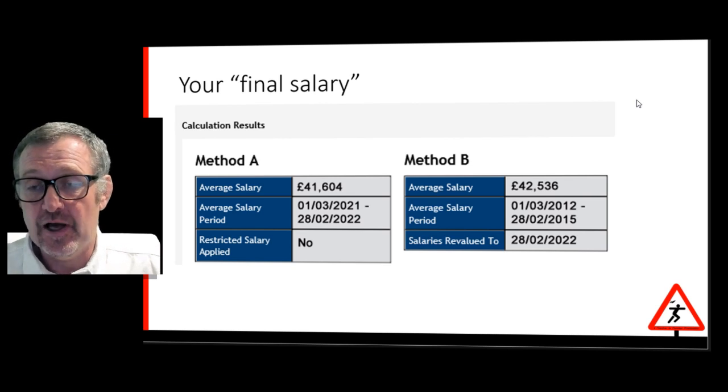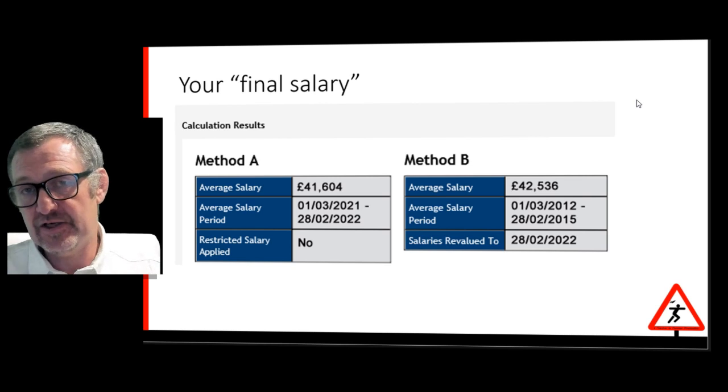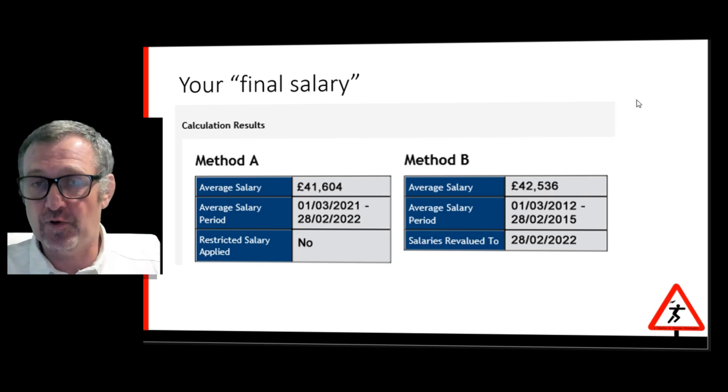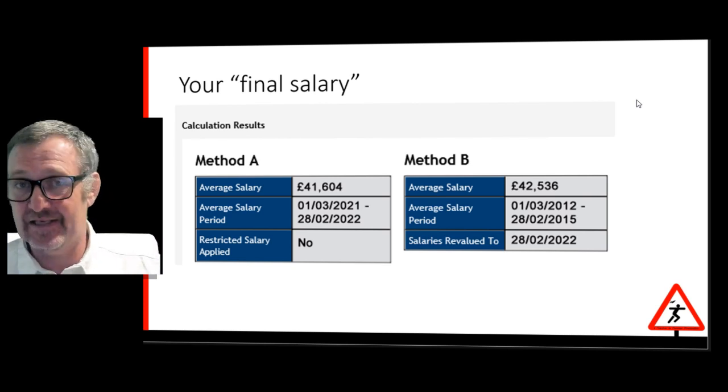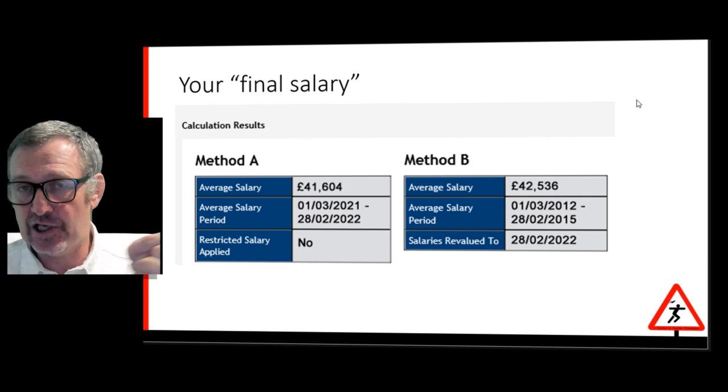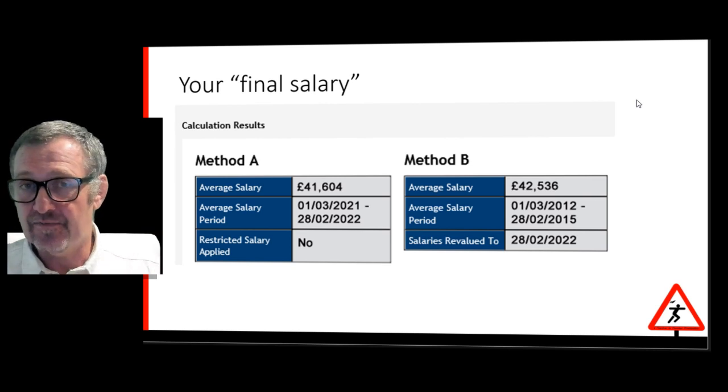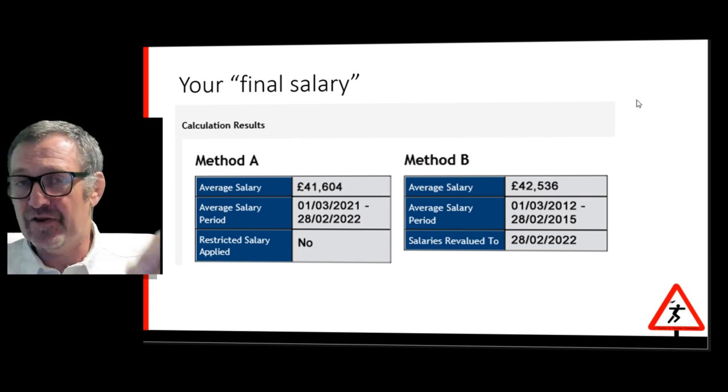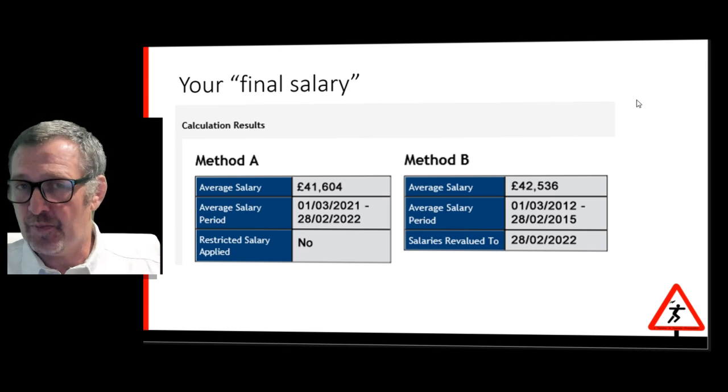So Method A is unlikely to change for another six months. Method B, however, is going to get another six months of inflation one month after the other. Now, that's not going to help if your actual best salary is going to disappear as well. But it's worth bearing in mind that if your Method A at the moment is slightly higher, and we're talking inflation about six, seven percent than Method B, that might not be the case in a few months time.